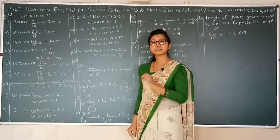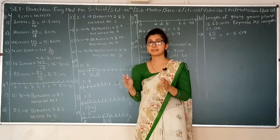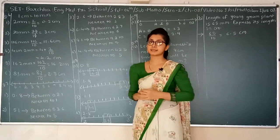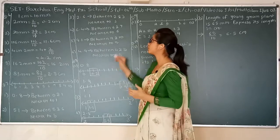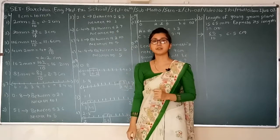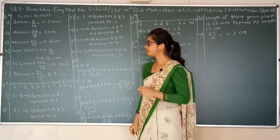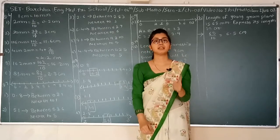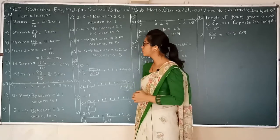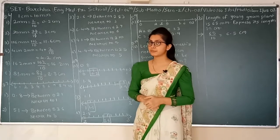Next one: 6.4. 6.4 will be in between 6 and 7. Now 6.4 is smaller than 6.5, so it will be closer to the smaller number, which is 6 in our case. Next one: 9.1. 9.1 will be between 9 and 10, and it is closer to 9 because 0.1 is smaller than 0.5.